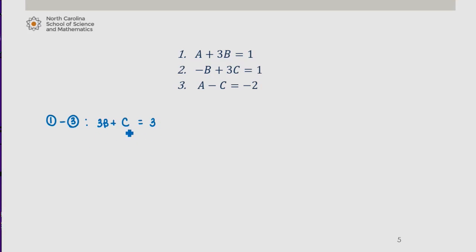Using equation 2 and this new equation, I can use the method of elimination by multiplying the second equation, this is equation 2, by 3, which gives me negative 3B plus 9C equals 3. If I add these two, I get 10C equals 6, so C is 3 fifths.